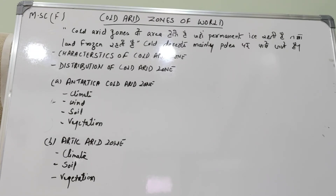Antarctica cold region में soil: इसका 2% भाग ice free है जो Trans-Antarctic mountains और Antarctic peninsula में पाया जाता है। Coastal areas पर भी ice free part पाया जाता है जहाँ ice shields स्थान छोड़ चुकी होती हैं। Low temperature के कारण soil formation की chemical process और biological activity बहुत कम होती है। Soil moisture भी बहुत कम उपलब्ध होता है, इसलिए soil immature होती है जिसमें बहुत कम organic matter और mineral nutrients पाए जाते हैं।